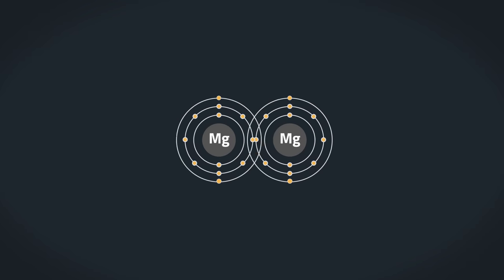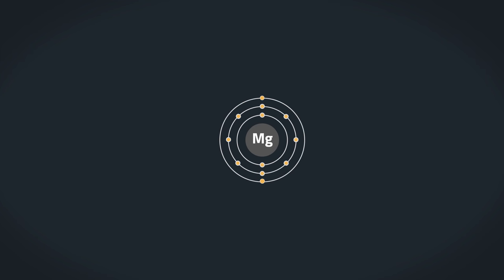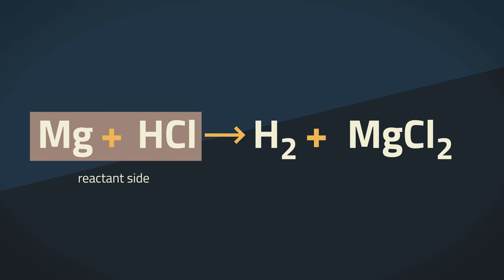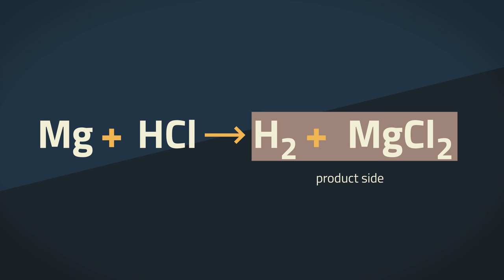Because atoms are never created or destroyed during chemical change, only rearranged, the number of atoms for each element on the reactant side must be equal to the number of atoms for each element on the product side. So the balanced equation will look like this.